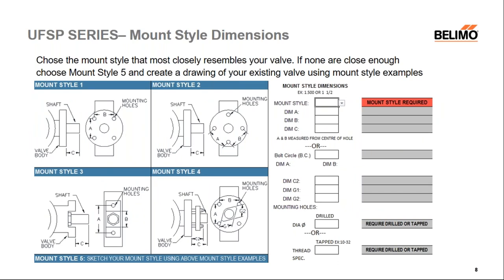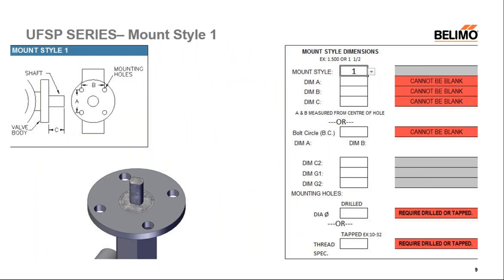The first major area of the UFSP series is the mount style. The customer chooses the mount style that most closely resembles their current valve. If none are close enough, the customer can choose mount style five and create a drawing of their existing valve using the provided examples. Once a mount style is picked, the selected area stops being red and turns gray, indicating it has been filled in.